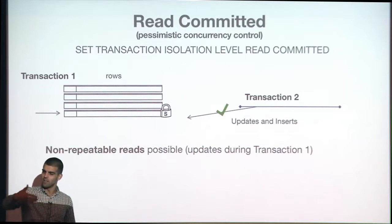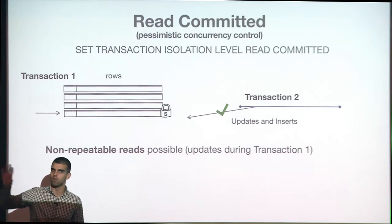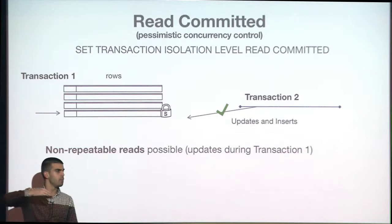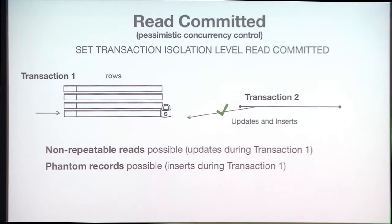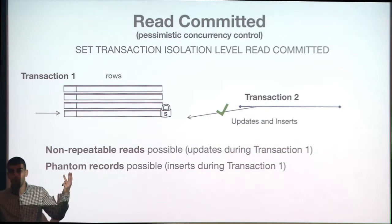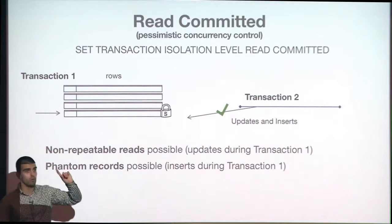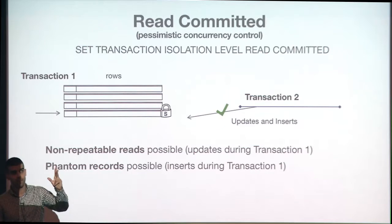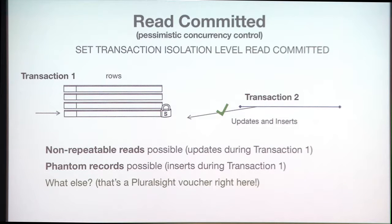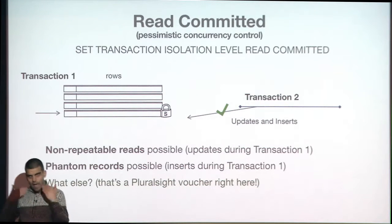The first phenomenon is the dirty read — reading uncommitted data. The second concurrency phenomenon is called non-repeatable read: I open a transaction with three selects, read the same data the first time, then read again and the data has been modified — it's no longer the same. And the third phenomenon is phantom records: I read and see 50 records, read again and see 51.